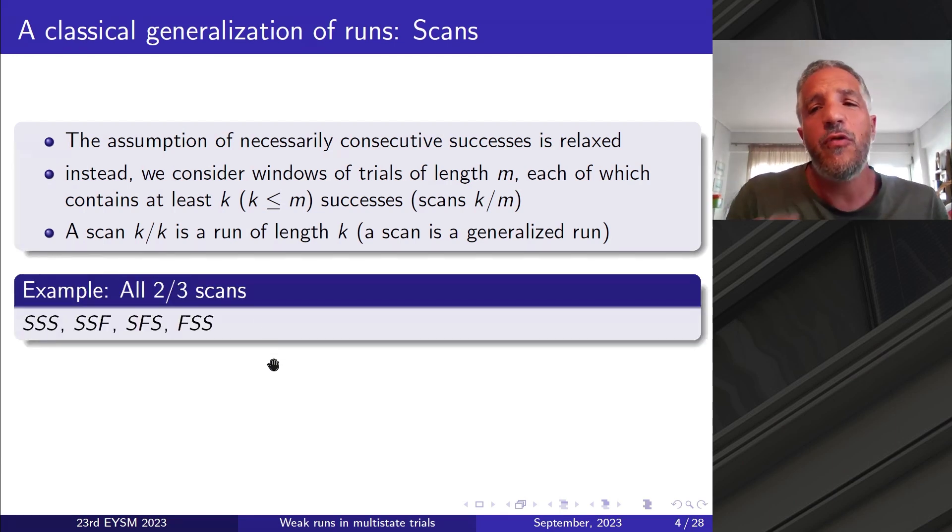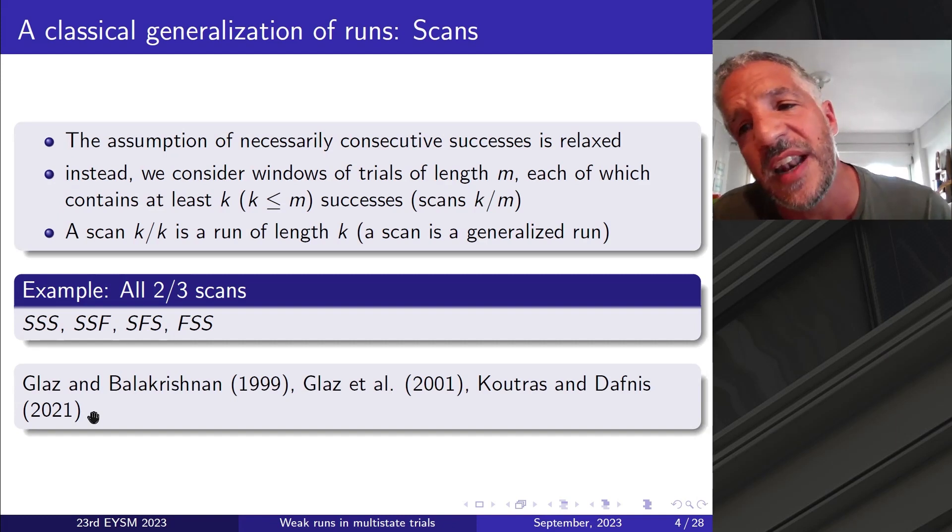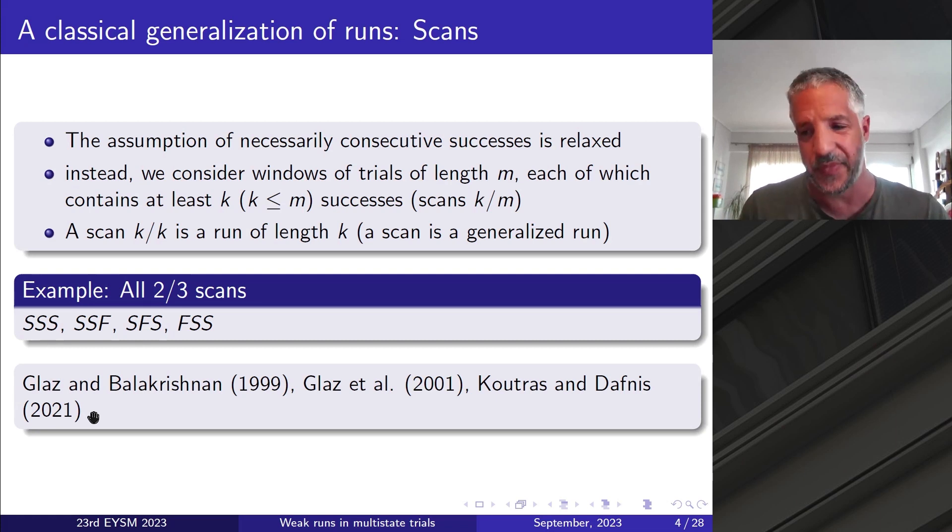So if I would like to present you all 2 out of 3 scans, what does it mean? In windows of three trials, we want at least two successes. So these are the four cases: SSS, SSF, SFS, FSS. If you want to have further information on the area, I would recommend the book of Glaz and Balakrishnan, or a recent review article by Dafnis, Koutras and Lyberopoulos 2021.